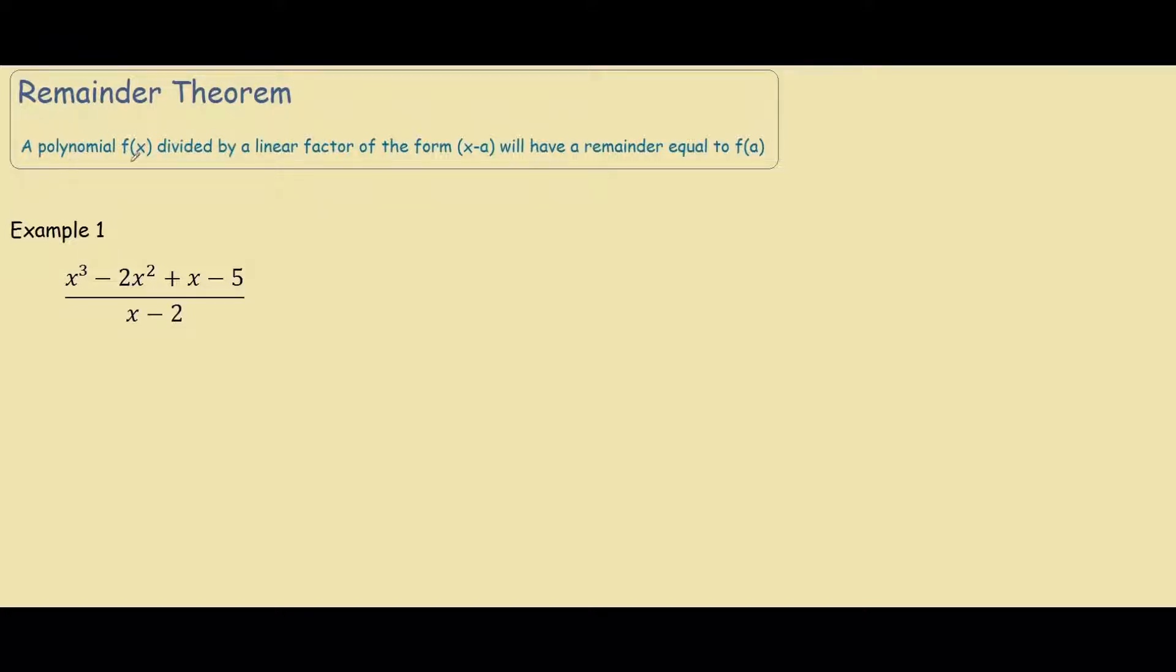So we have a polynomial f(x) which is divided by a linear factor of the form x-a. It says that our remainder will be equal to f(a). So let's go through an example to clarify what this definition means.